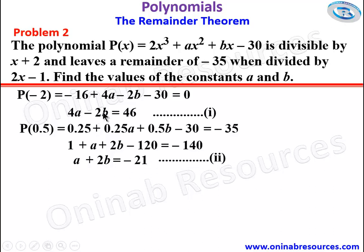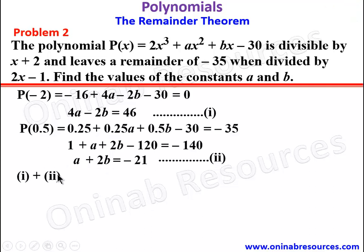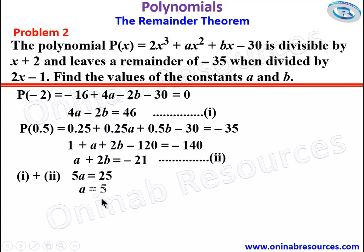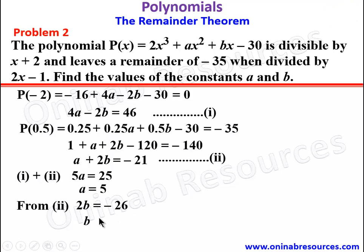We can eliminate b since the coefficients of b in equations 1 and 2 are equal but opposite in sign, so we add equations 1 and 2. 4a plus a gives 5a; negative 2b plus 2b gives 0; 46 plus negative 21 gives 25. Dividing both sides by 5, a equals 5. Substituting a equals 5 into equation 2, we get 2b equals negative 26, and dividing by 2, b equals negative 13.